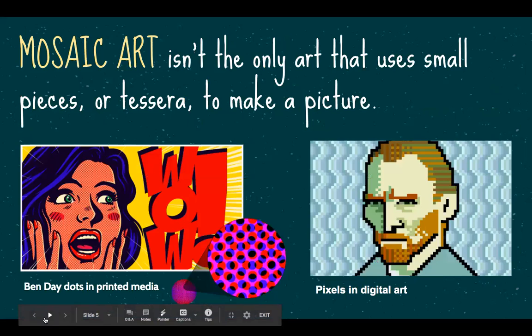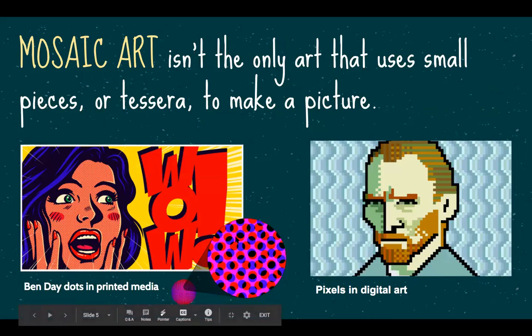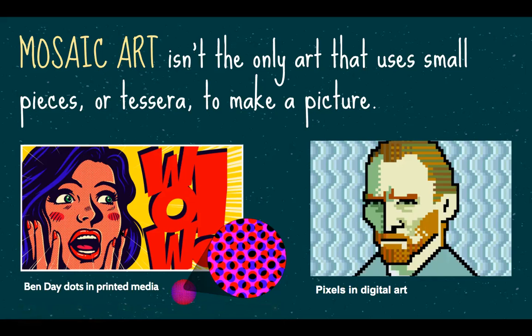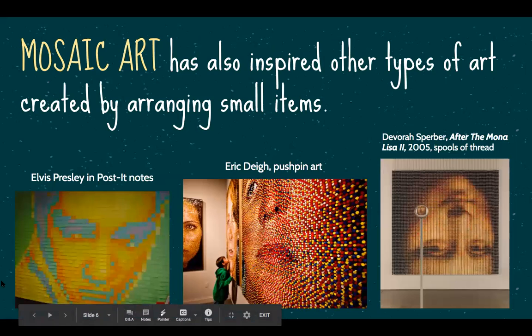In modern art today, the idea of mosaics has been modified in different ways. Benday dots — the use of layered dots and color in printed media and pop art — are an example of how we use tesserae or small pieces to create a bigger image, similar to how we use pixels in digital art. Those are kind of modern mosaics, and here are some other modern mosaic ideas.